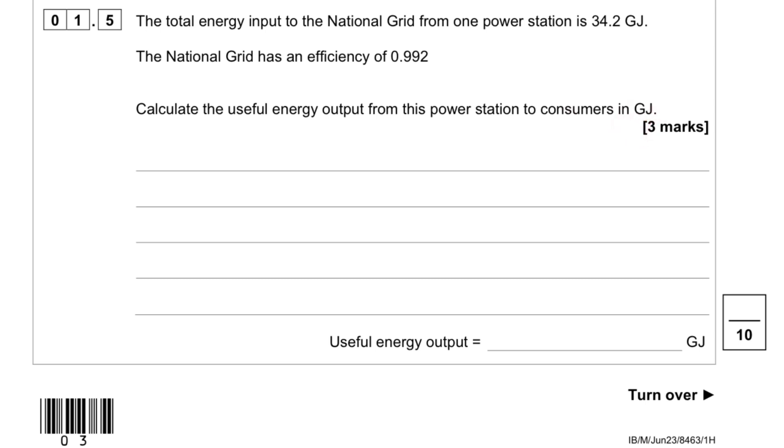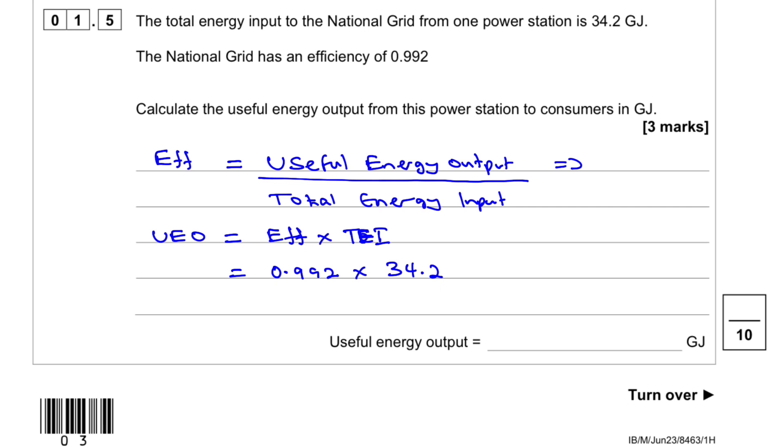Well, we can then write the efficiency to be equal to the useful energy output over total energy input. So we can say the useful energy output will be equal to the efficiency times the total energy input. So we know the efficiency is 0.992 times the total energy input is 34.2 gigajoules.